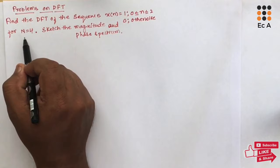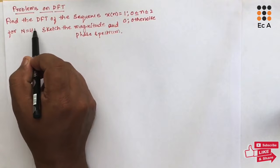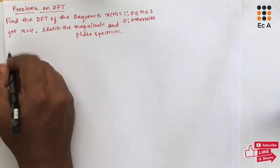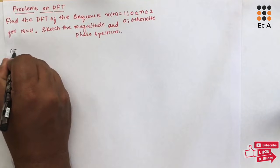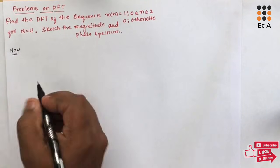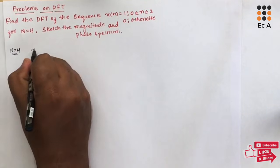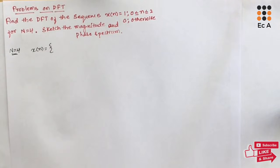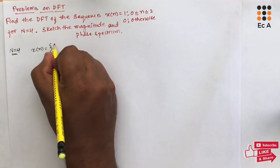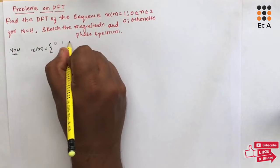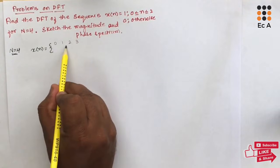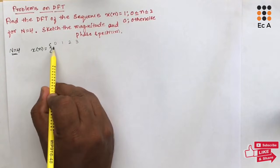In an exam, they may ask you to find for N = 8 and so on. Since N = 4 here, x[n] will have a length of 4, which means it will have positions 0, 1, 2, and 3. So the length of this sequence will be 4.